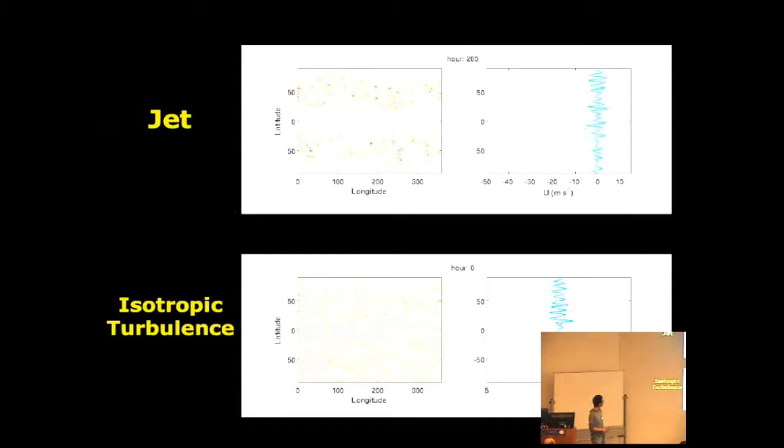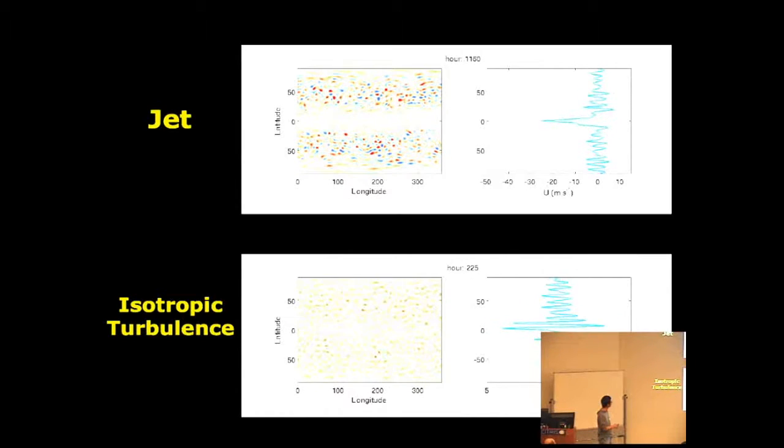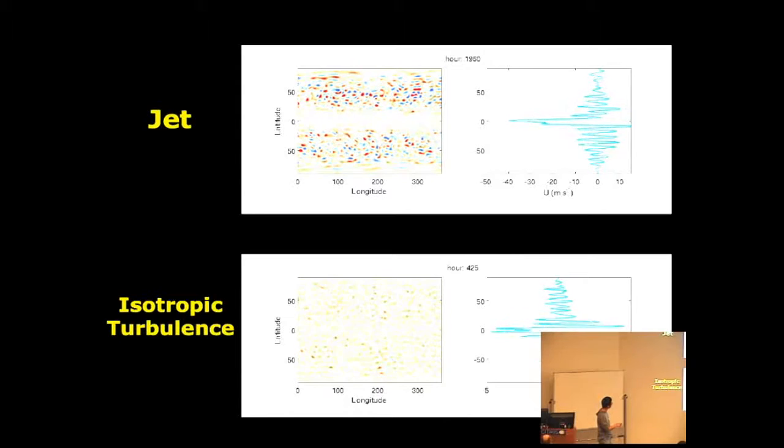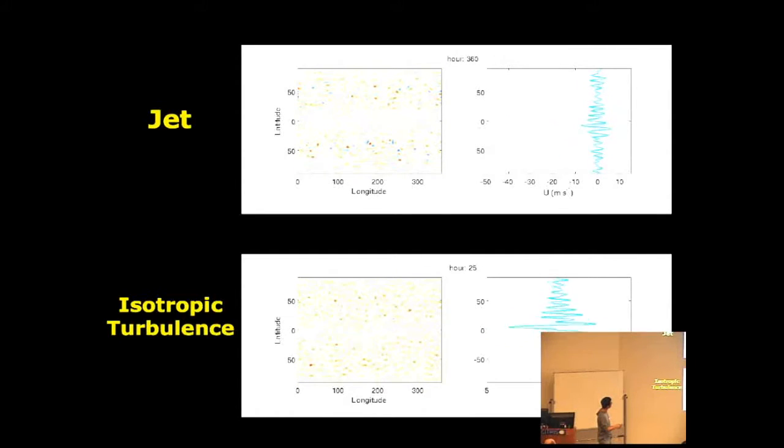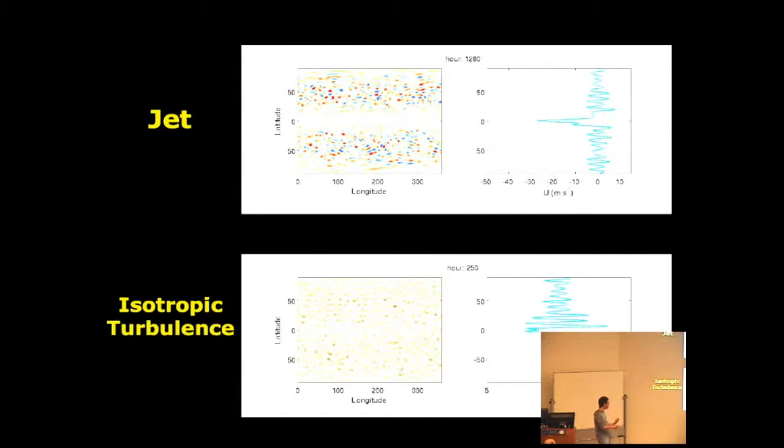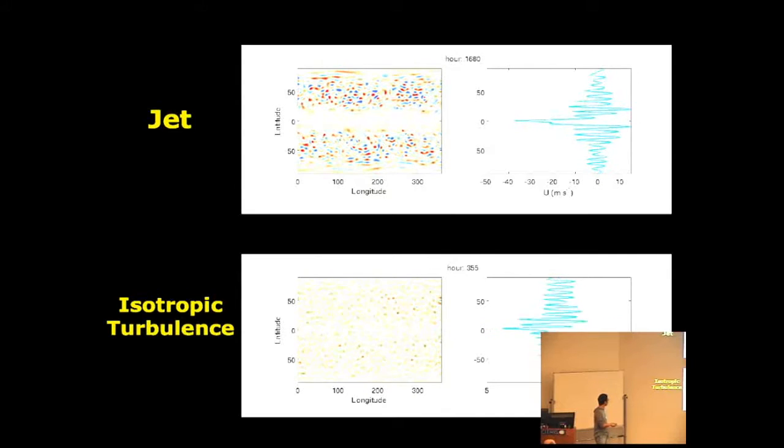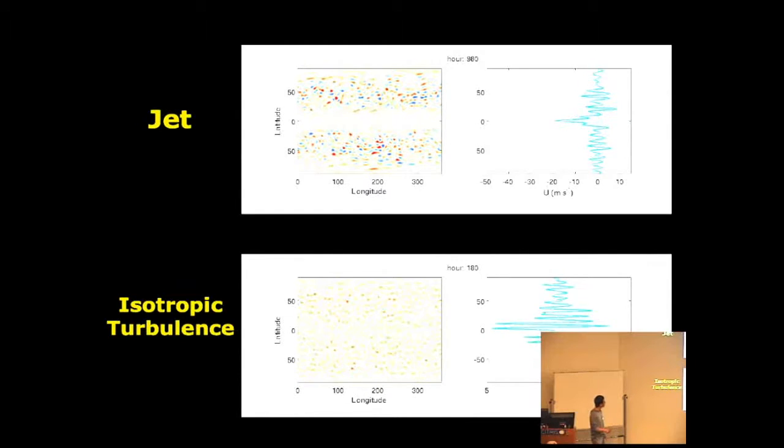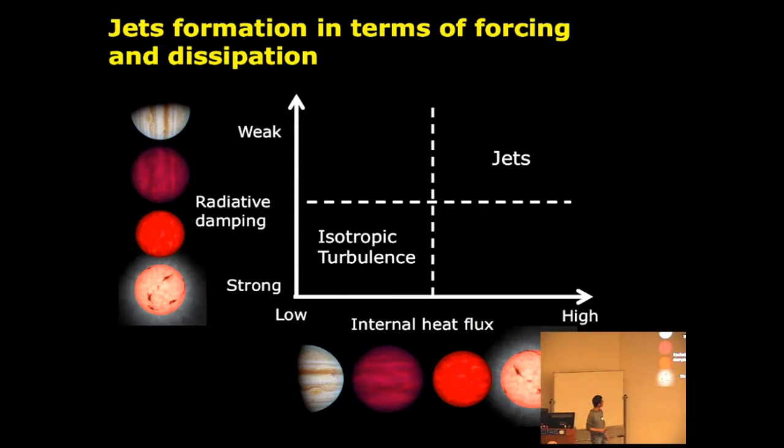I'll quickly show two simulations. The first one: this is latitude and this is longitude. We put moist convection in the convective layer and it drives the jets in the upper layer. Here you show the thickness changes. You see jets developing here. And these are winds. You see some bands that develop a very strong westward jet at the equator. Here's a different simulation with different parameters. You can see isotropic turbulence. You never see this kind of steady jet at the equator. So what's the difference between the two?